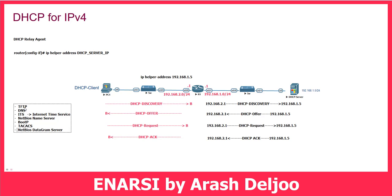TFTP is the Trivial File Transfer Protocol, DNS is Domain Name System, ITS is Internet Time Service, plus NetBIOS Name Server, BOOTP, TACACS, and NetBIOS Datagram Server. However, in most cases these aren't present in the network, so the main function of 'ip helper-address' is for DHCP — that's why it's called DHCP Relay Agent.